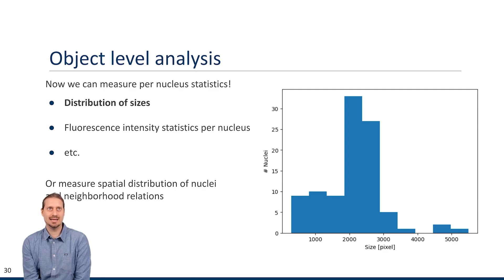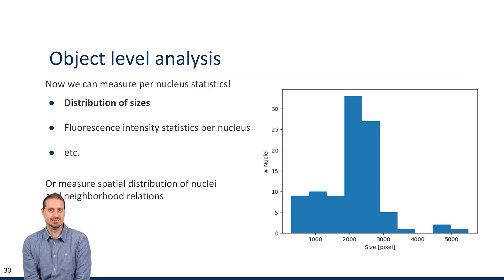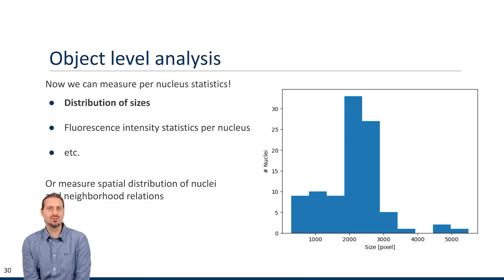The next step — object-level analysis — is fairly simple. We go over the segmentation image and for each mask or color, we measure the size: how many pixels have the value of a given nucleus. We plot these in a histogram showing the size distribution and number of nuclei per size bucket. We can also measure average intensity statistics per nucleus, or answer other object-level questions relevant to the research, including spatial distributions and neighbor relations.